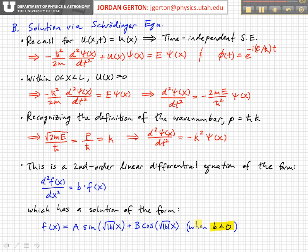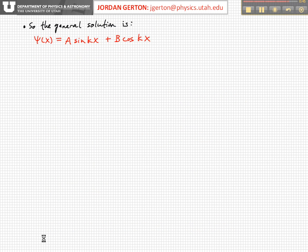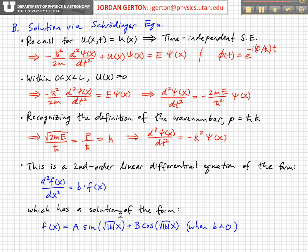And now we identify minus k squared as b. So in fact, b is less than 0, and therefore we're going to get solutions of the form: psi(x) equals A sin(kx) plus B cos(kx), where we've basically just used this general form for the differential equation.